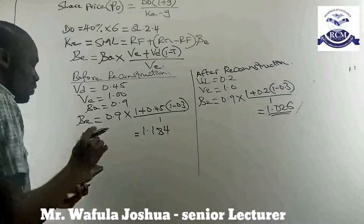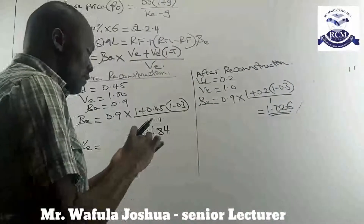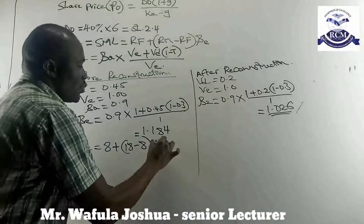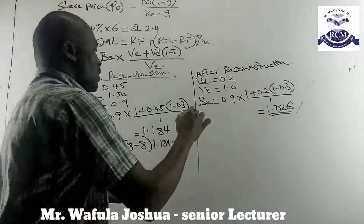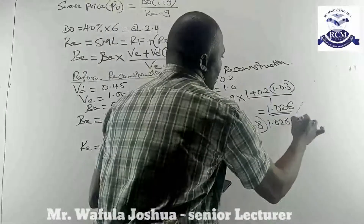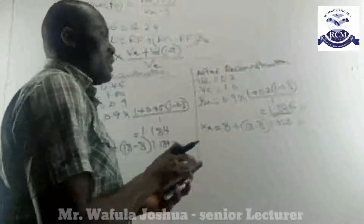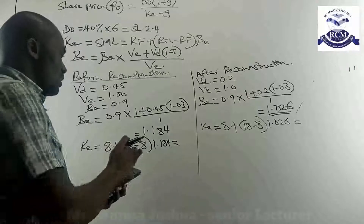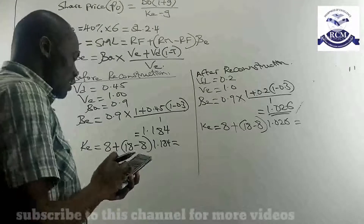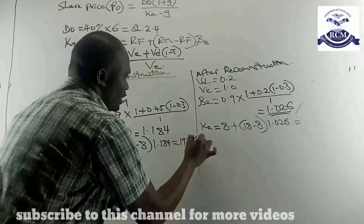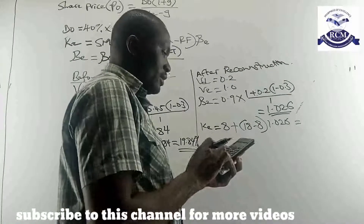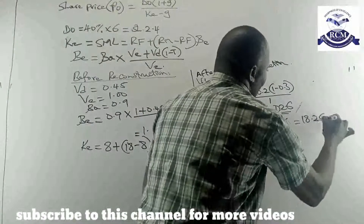Before reconstruction, KE equals RF of 8% plus (RM minus RF of 18 minus 8) times beta of 1.184, giving 10 times 1.184 plus 8 equals 19.84%. After reconstruction, KE equals 8 plus (18 minus 8) times 1.026, giving 10 times 1.026 plus 8 equals 18.26%.